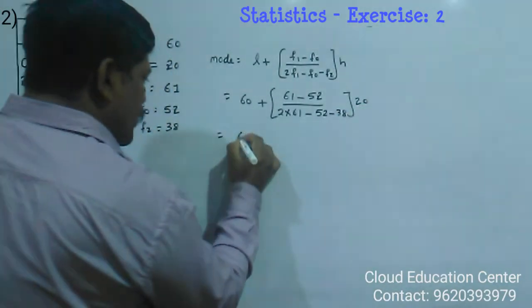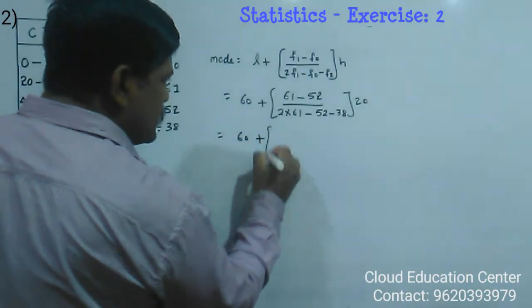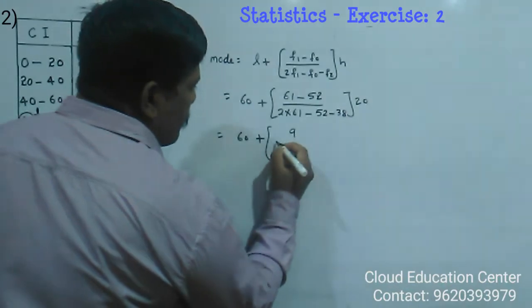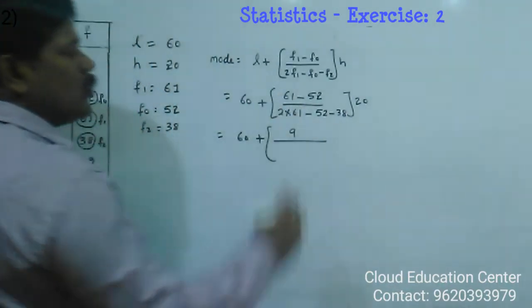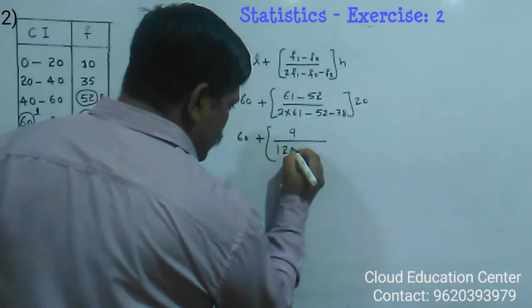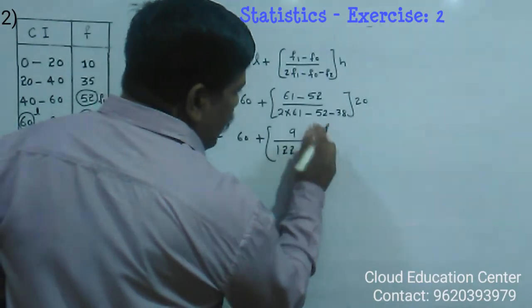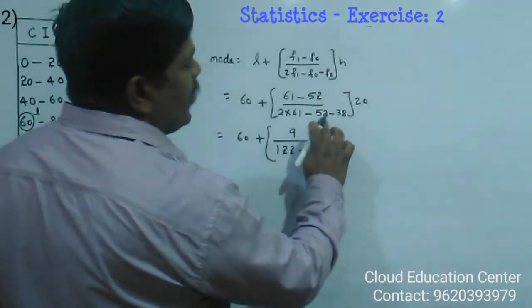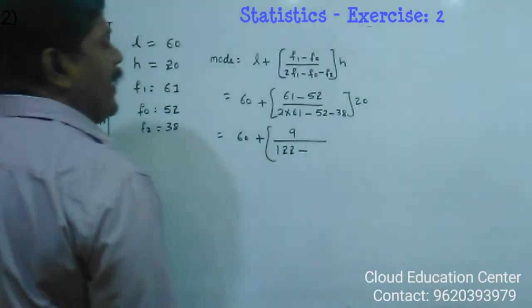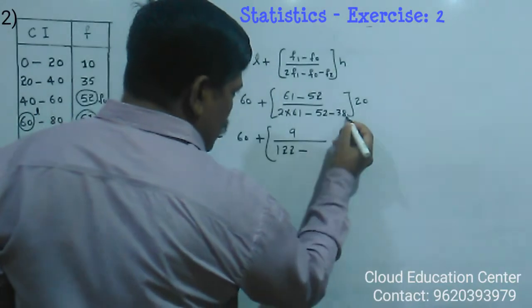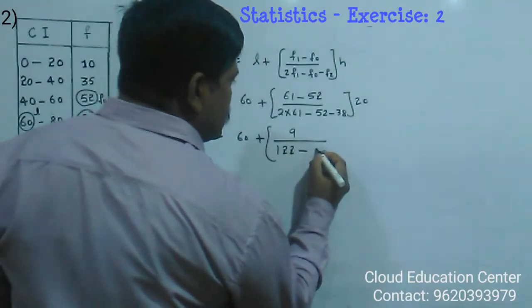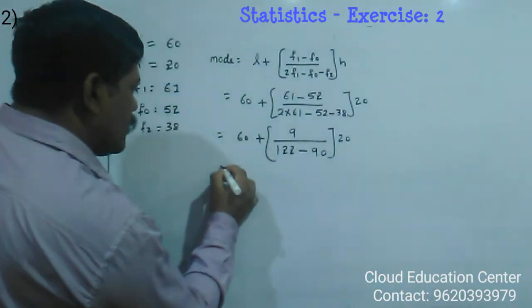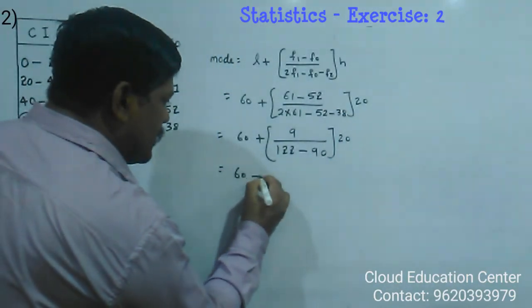Here it is 60 as it is. 61 minus 52 is 9, divided by 2 into 61 is 122. And minus minus is there, you must add and put the minus sign. That is 52 and 38 is 90, into 20 equals 60 plus...